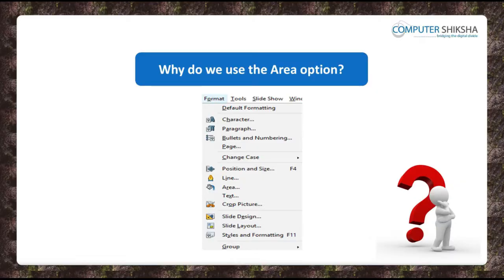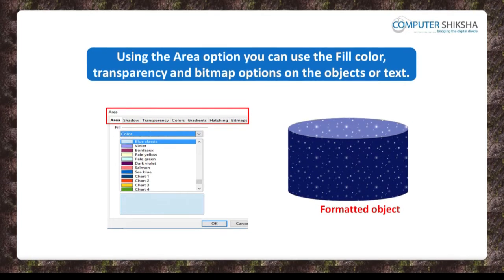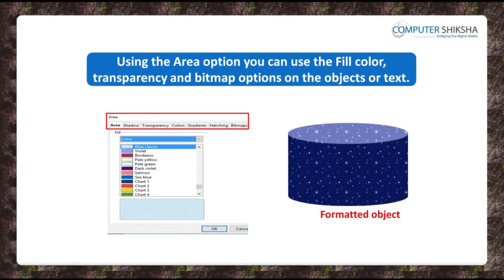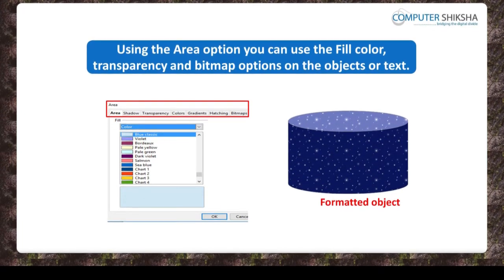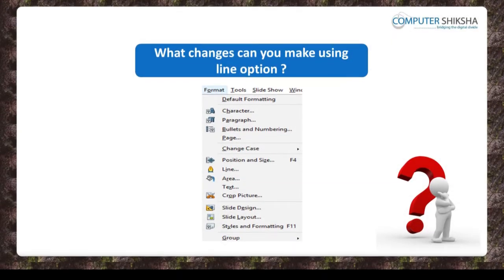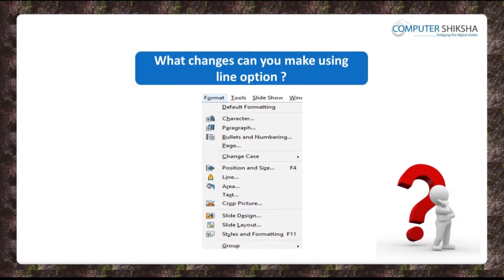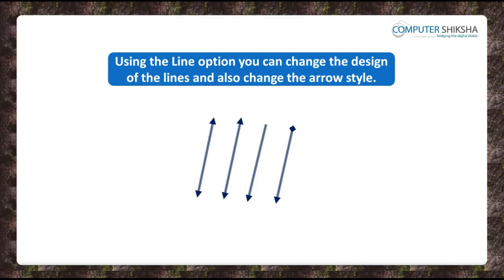Why do we use the area option? Using the area option, you can use the fill color, transparency and bitmap options on the objects or text on your slides. What changes can you make using the line option? Using the line option, you can change the design of the lines of the objects and can also change the lines into arrows.